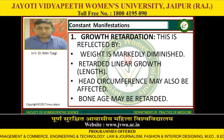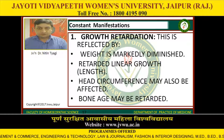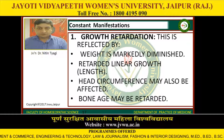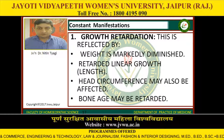Constant manifestations: the first one is growth retardation. This is reflected by weight being markedly diminished, retarded linear growth (that is, length), the head circumference may also be affected, and the bone age may be retarded.